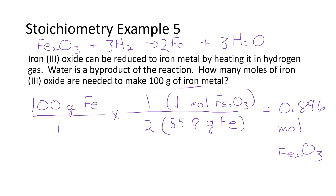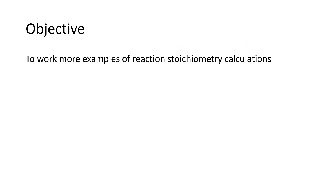Just to track where these numbers came from: in our conversion factor, the numbers in parentheses — like one mole and 55.8 grams — are numbers from the conversion chart, and the numbers out in front — the one on top and the two on the bottom — are coefficients from the balanced equation. So the two is the coefficient in front of iron, and the one is the coefficient in front of Fe2O3. Our objective was to work more examples of reaction stoichiometry calculations.